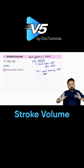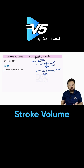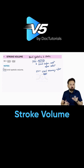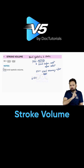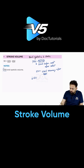If contraction is more, end systolic volume will be less. If contraction is very slow, end systolic volume will be more. So this concept is very important and will help you in so many areas of understanding: lesser is the end systolic volume, better will be the contractility.